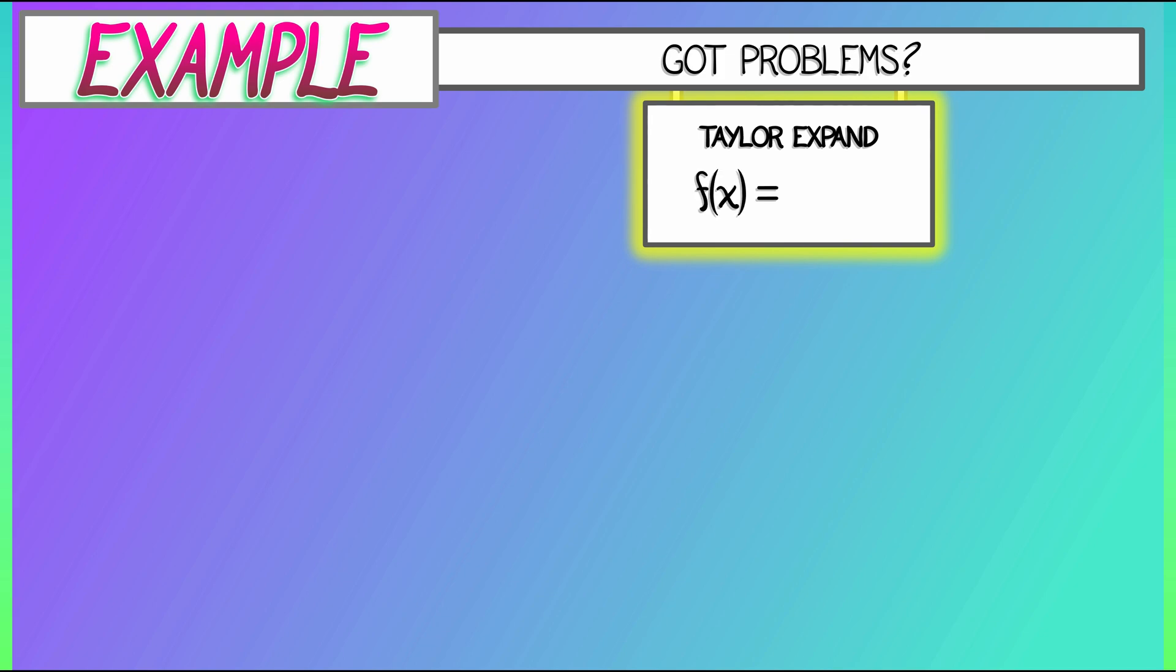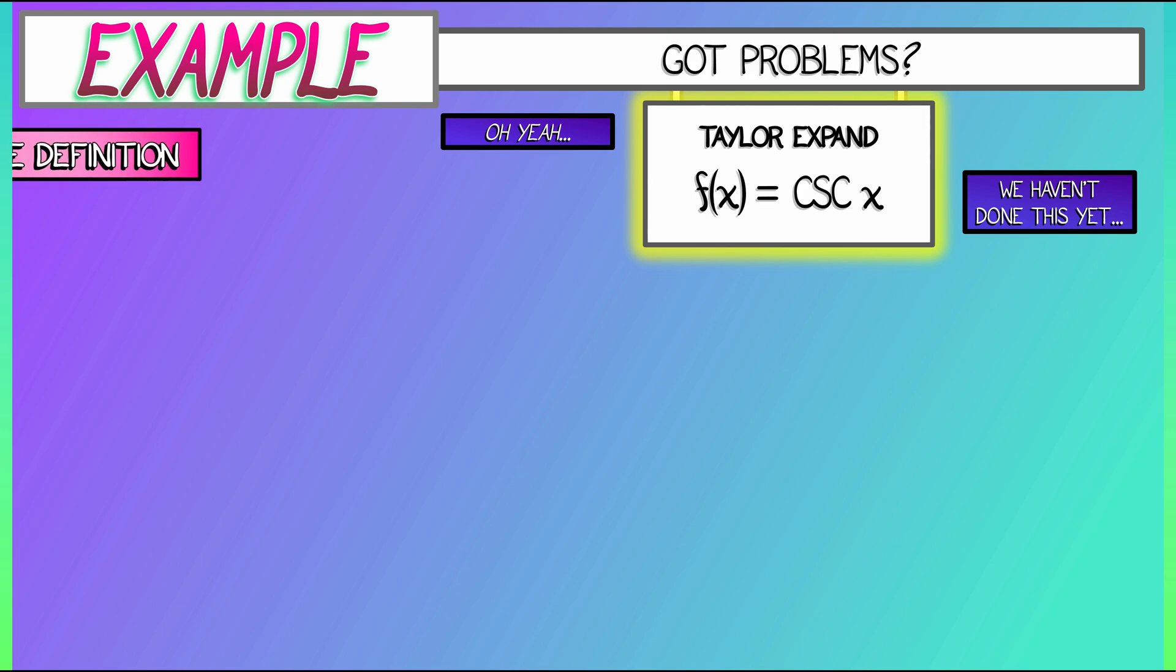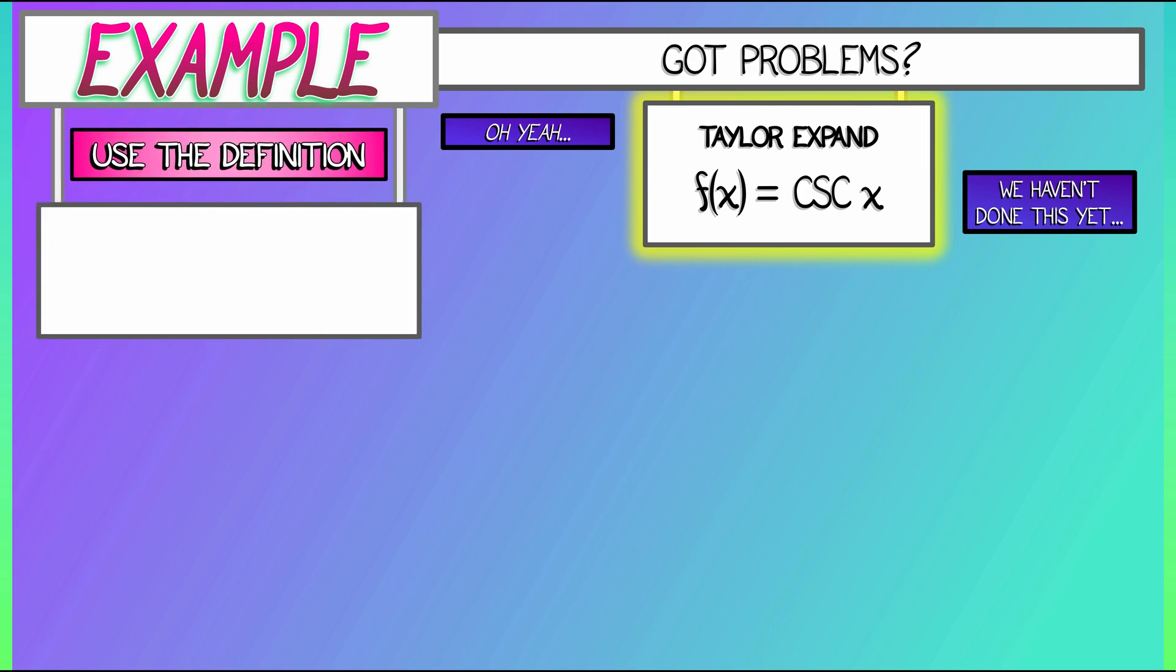For the first example, let's say that we Taylor expand a trig function. How about cosecant of x? Yeah, we've done sine, we've done cosine. We haven't done that one yet. I wonder how this is going to go. Well, we could just use the definition. We know the definition for the Taylor series right now. So what do we got to do?